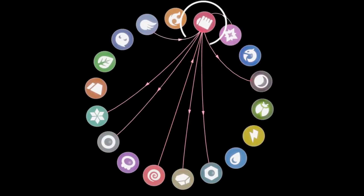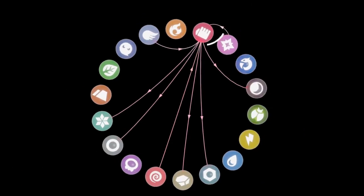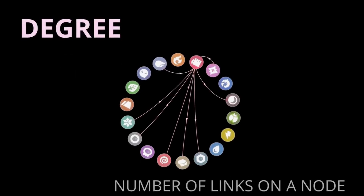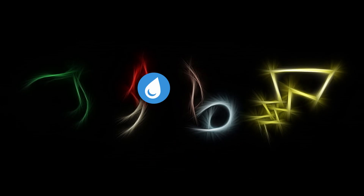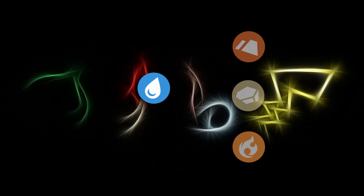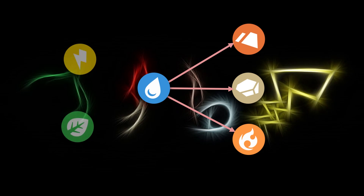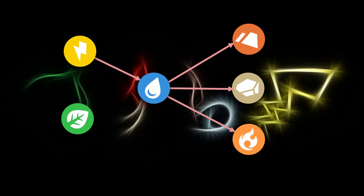He talks about how you can have each type as a node — a data point — and say you have water type, and water type points to all the other types that it's strong against. So water type points to ground, points to rock, points to fire. And you do that with all of them, so you end up with electric pointing to water, grass pointing to water.